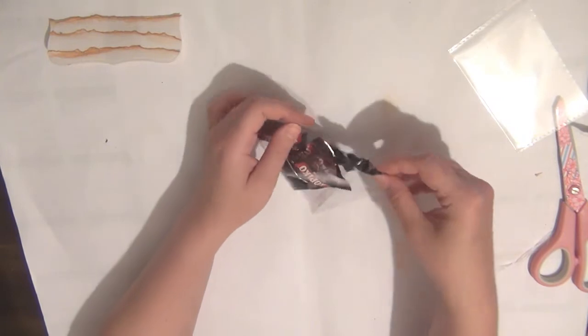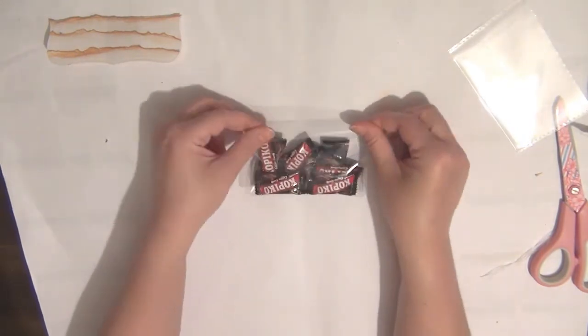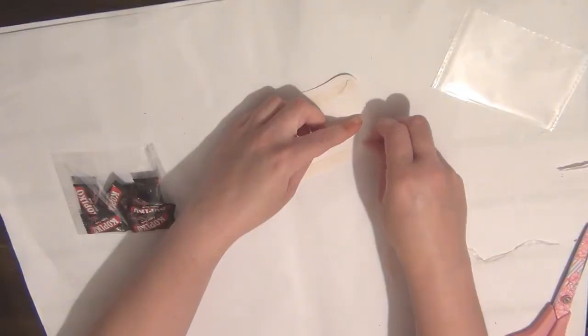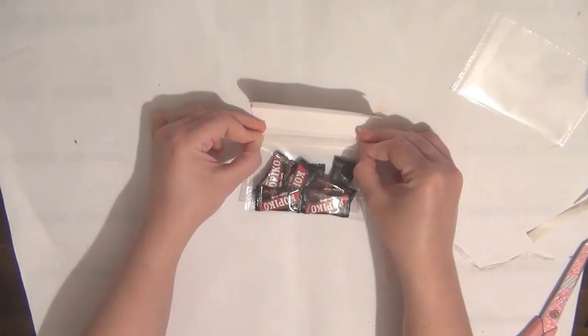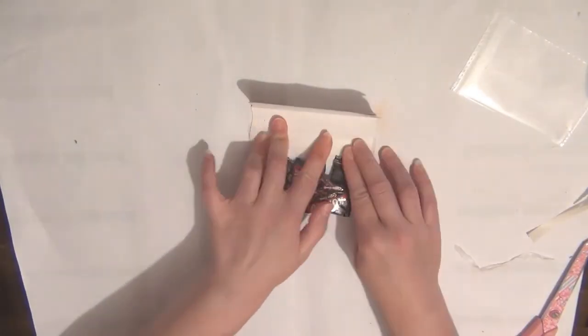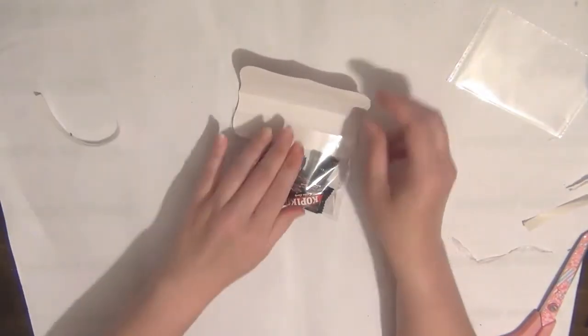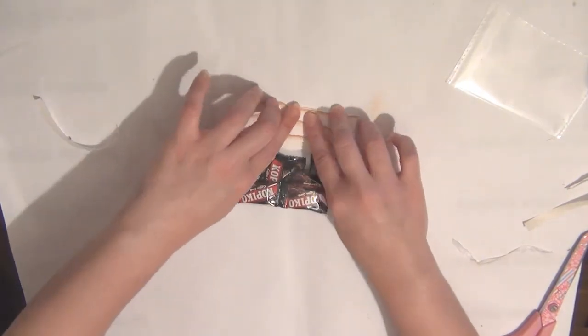Next, take your cellophane bag and trim that to the size that you want and add your treats. To finish this off, just add some adhesive to your die cut and place that bag in between and just adhere that down.